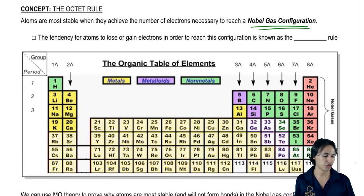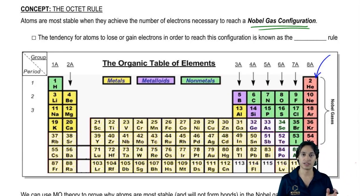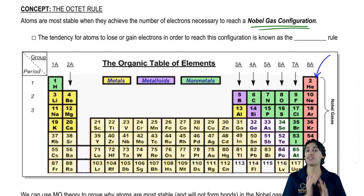Just so you guys remember, the noble gases are these pink colored atoms right there. The noble gases are the most stable atoms in the entire periodic table.